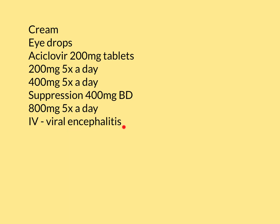There is also intravenous acyclovir that can be administered in hospital. The main situation where this is used is for viral encephalitis — often given empirically for herpetic encephalitis and then stopped if that diagnosis is ruled out. Another situation where intravenous acyclovir might be warranted is if someone has a really extensive, horrific herpetic skin infection making them very unwell, leading to hospital admission.